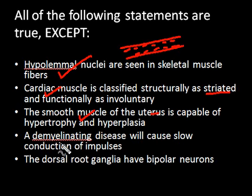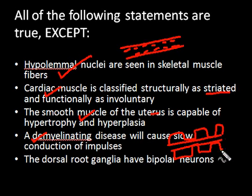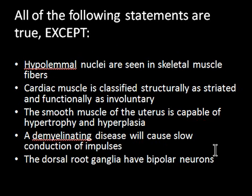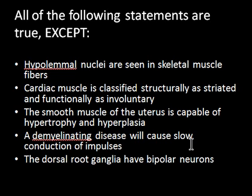The fourth statement: a demyelinating disease will cause slow conduction of impulses. This is also true. When a nerve fiber is myelinated, the impulse jumps from node to node at the nodes of Ranvier, so it is fast-conducting. When demyelinated, the myelin is removed and the impulse travels very slowly because it can no longer jump between nodes. Multiple sclerosis is one such disease where you see this slowing of impulses. So this statement is true.